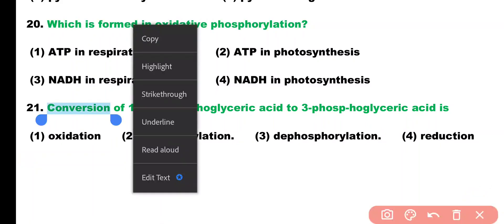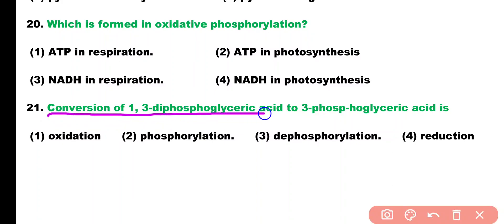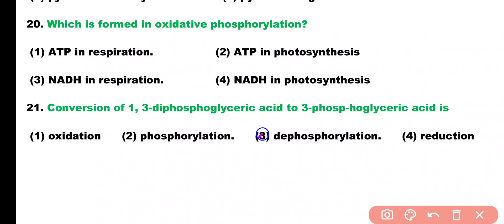Question number 21. The conversion of 1,3-diphosphoglyceric acid into 3-phosphoglyceric acid is: oxidation, phosphorylation, dephosphorylation, or reduction. Correct answer is option 3. The conversion of 1,3-diphosphoglyceric acid into 3-phosphoglyceric acid is a dephosphorylation reaction.